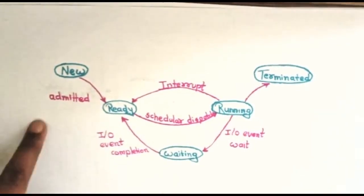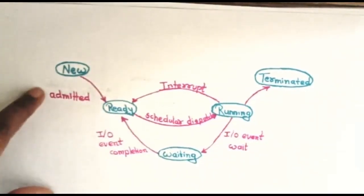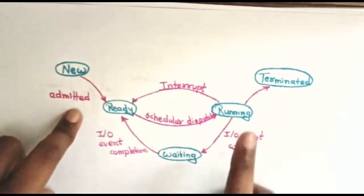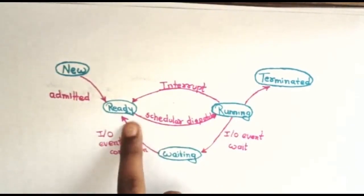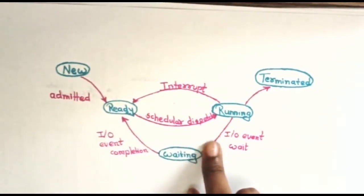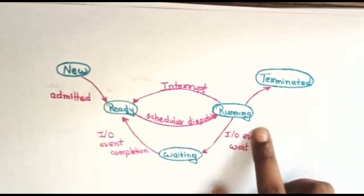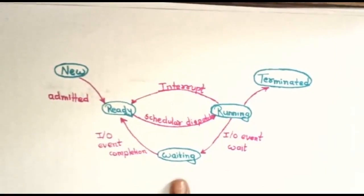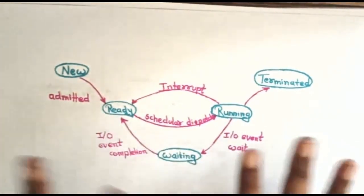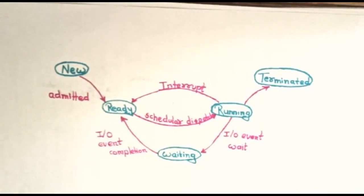Now we can see the diagram of process state showing new, ready, running, waiting, and terminated. In the new state the process is admitted. From ready to running, whenever the scheduler dispatches the process, it becomes running. From running to ready, whenever an interrupt is generated. While the program is executing, if an event occurs it enters the waiting state; when the problem is completed it goes back to ready. When the program is finished it goes to the exit state — the finish state.